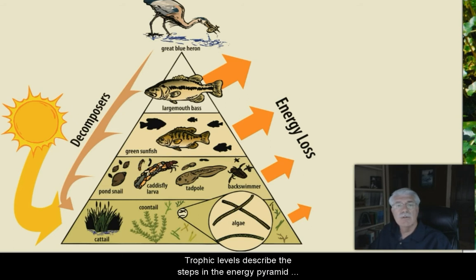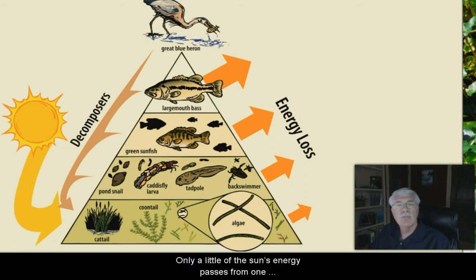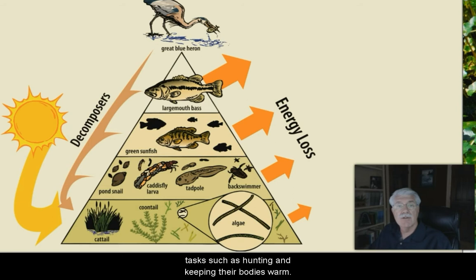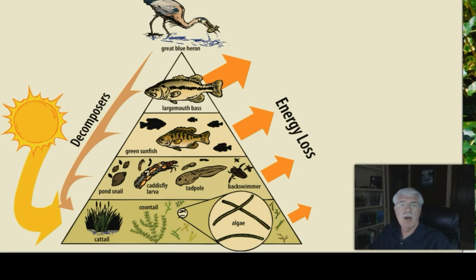Trophic levels describe the steps in the energy pyramid and the organism's roles at each level. Only a little of the sun's energy passes from one trophic level to the next. Animals lose energy doing tasks such as hunting and keeping their bodies warm.